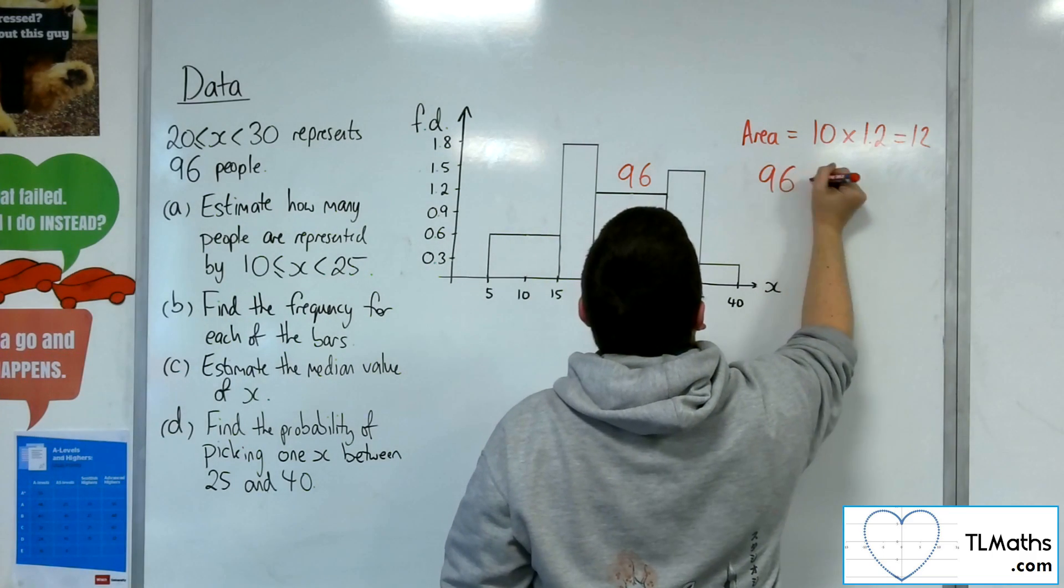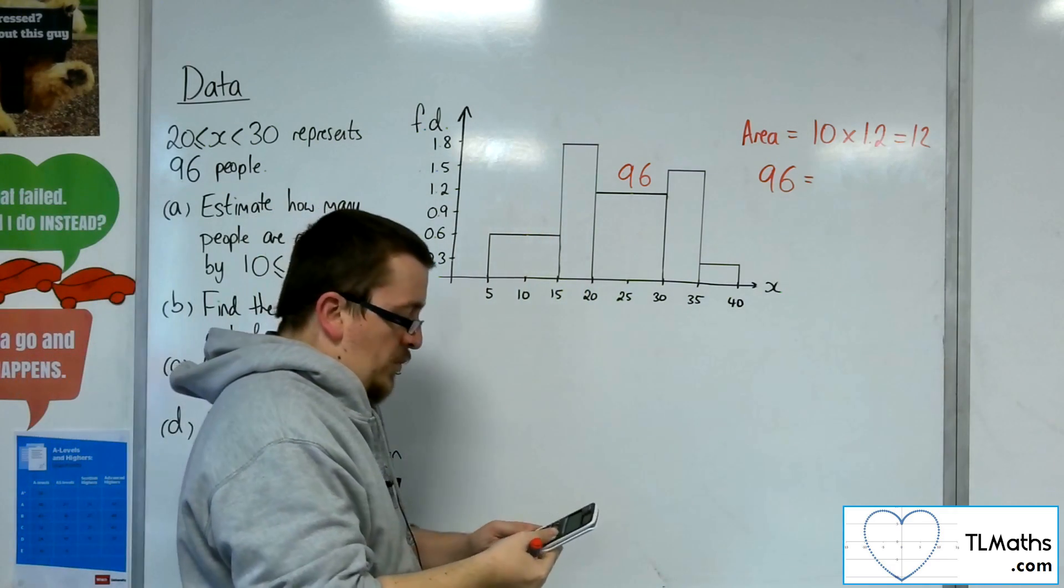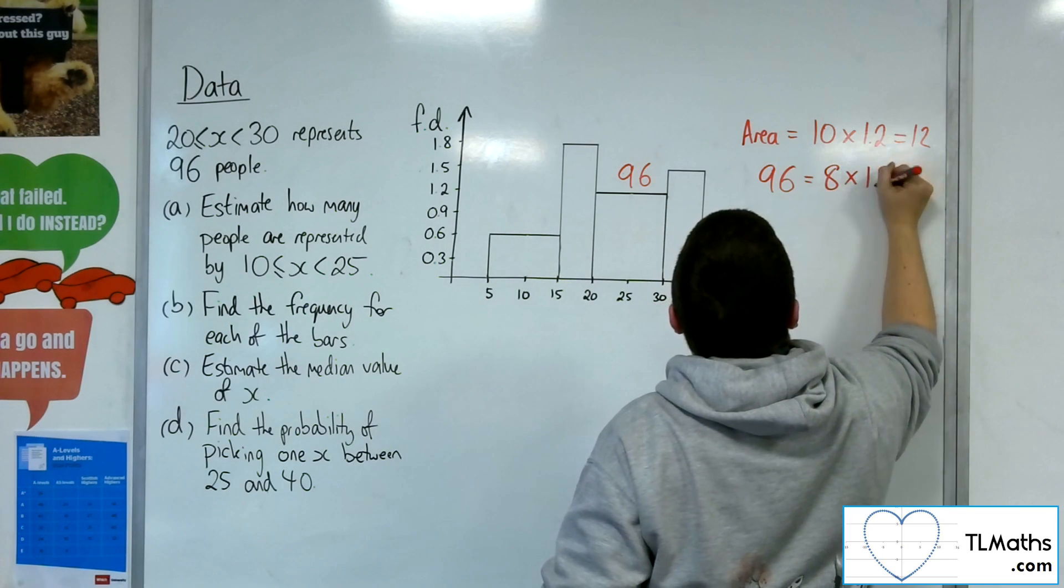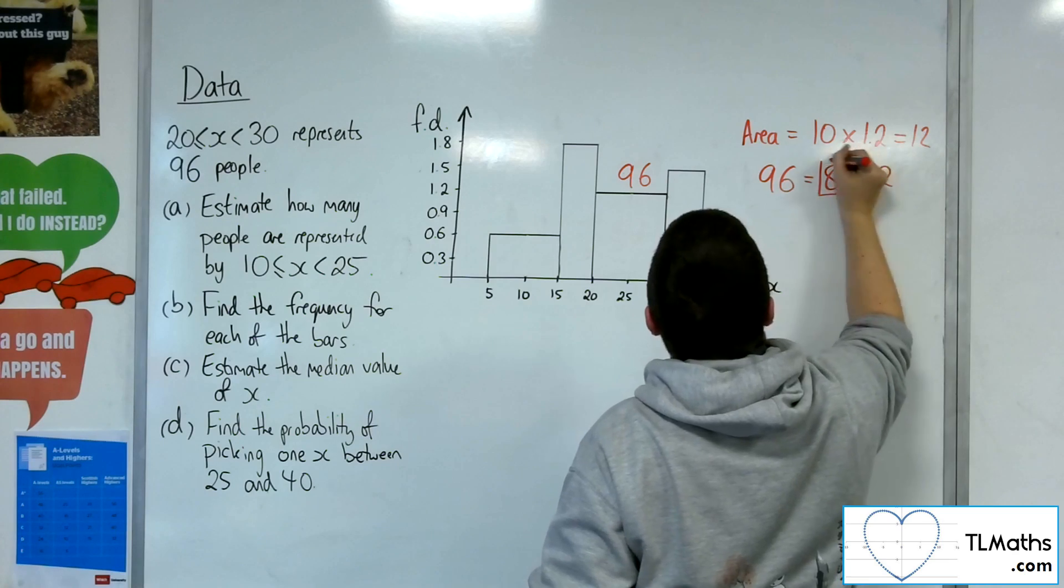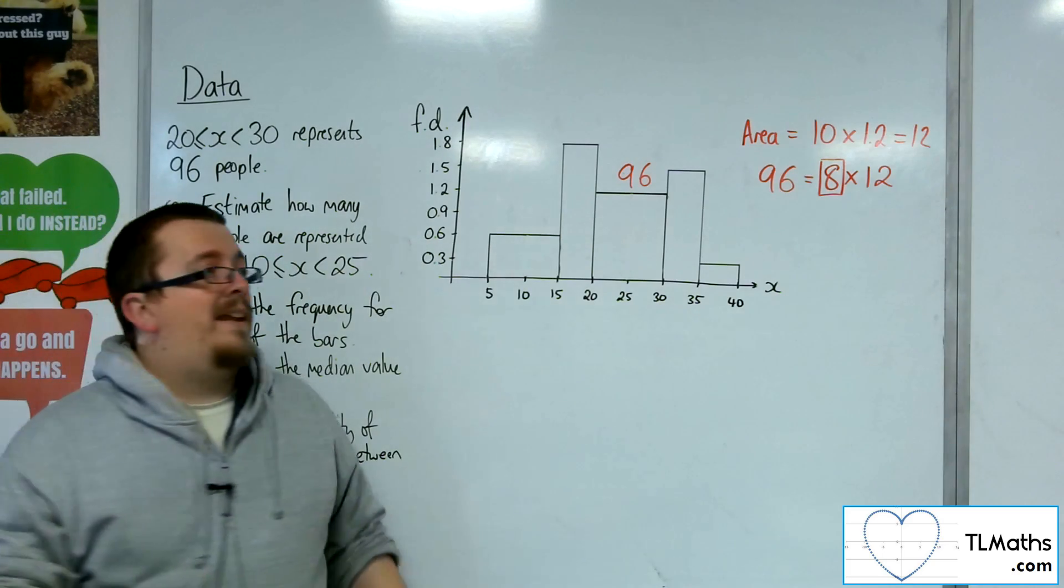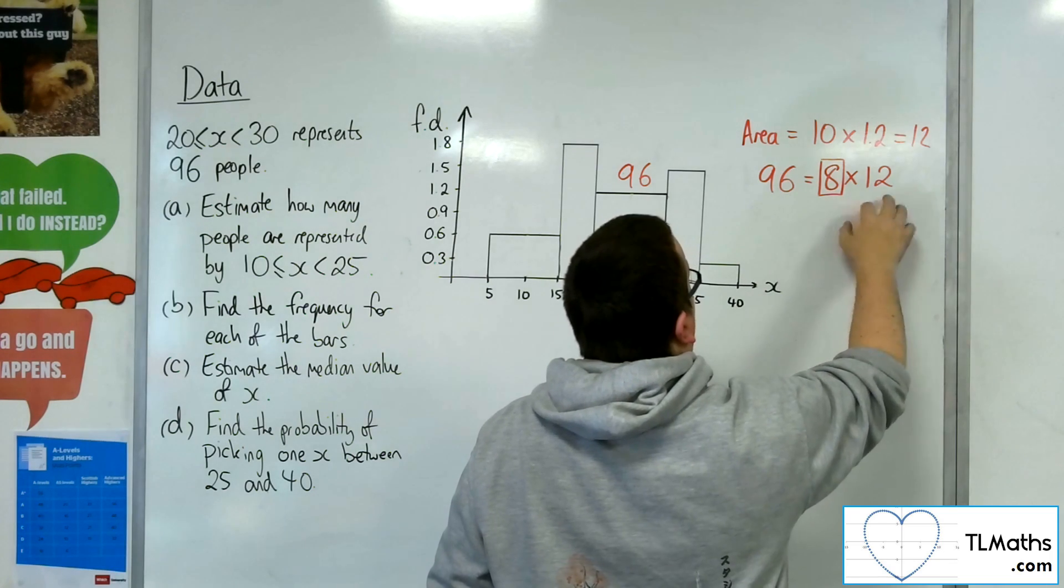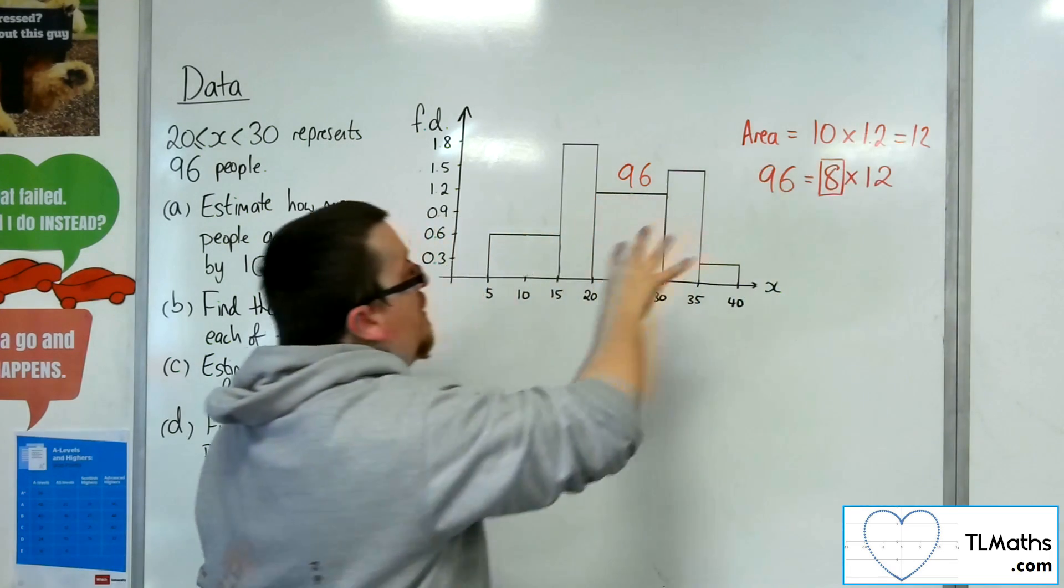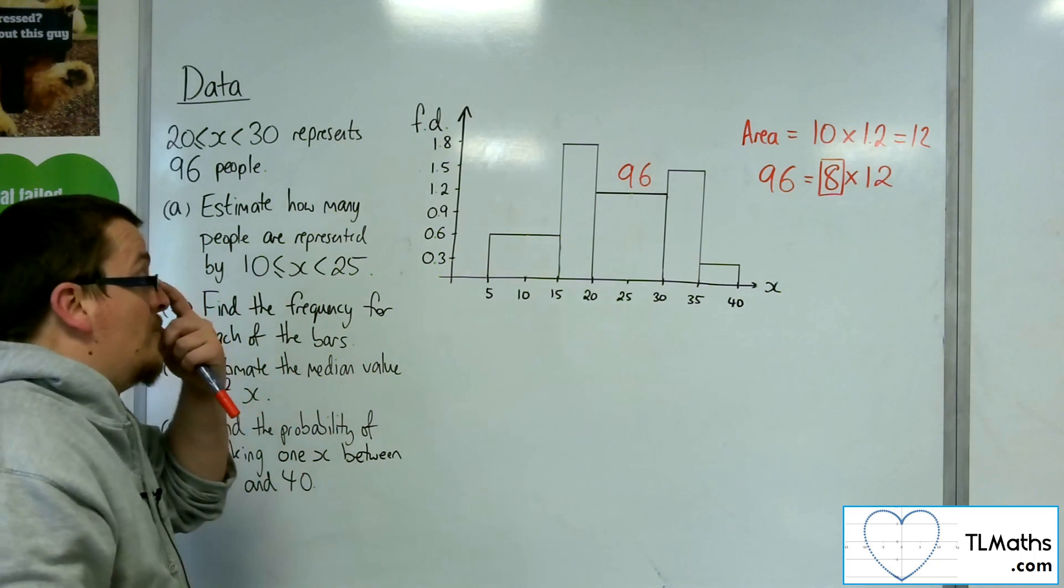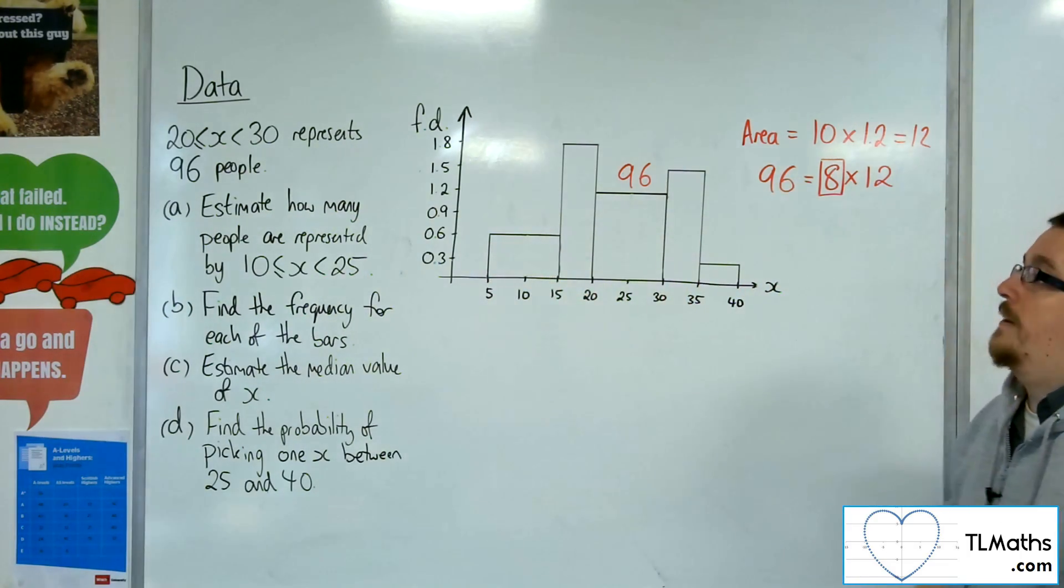However, 96 divided by 12 gets you 8. So it is this 8 that is the important number, this factor, this multiplier. Because it actually turns out that the frequency is proportional to the area. So it is that that we need to work with here. The frequency is proportional to the area. So we're going to use that fact for part A.